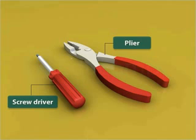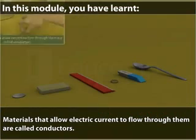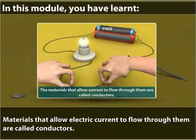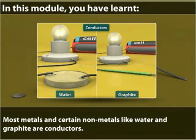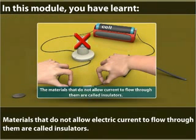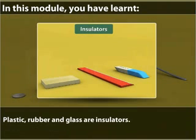In this module, you have learned: materials that allow electric current to flow through them are called conductors. Most metals and certain non-metals like water and graphite are conductors. Materials that do not allow electric current to flow through them are called insulators. Plastic, rubber, and glass are insulators.